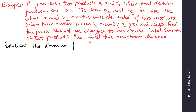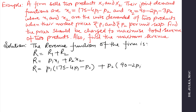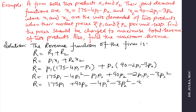The revenue function of the firm is R equals R1 plus R2, where R1 is p1·x1 and R2 is p2·x2. We replace x1 with 175 minus 4p1 minus p2 and x2 with 90 minus 2p1 minus 3p2. After simplification, the revenue function equals 175p1 plus 90p2 minus 4p1² minus 3p2² minus 3p1p2.